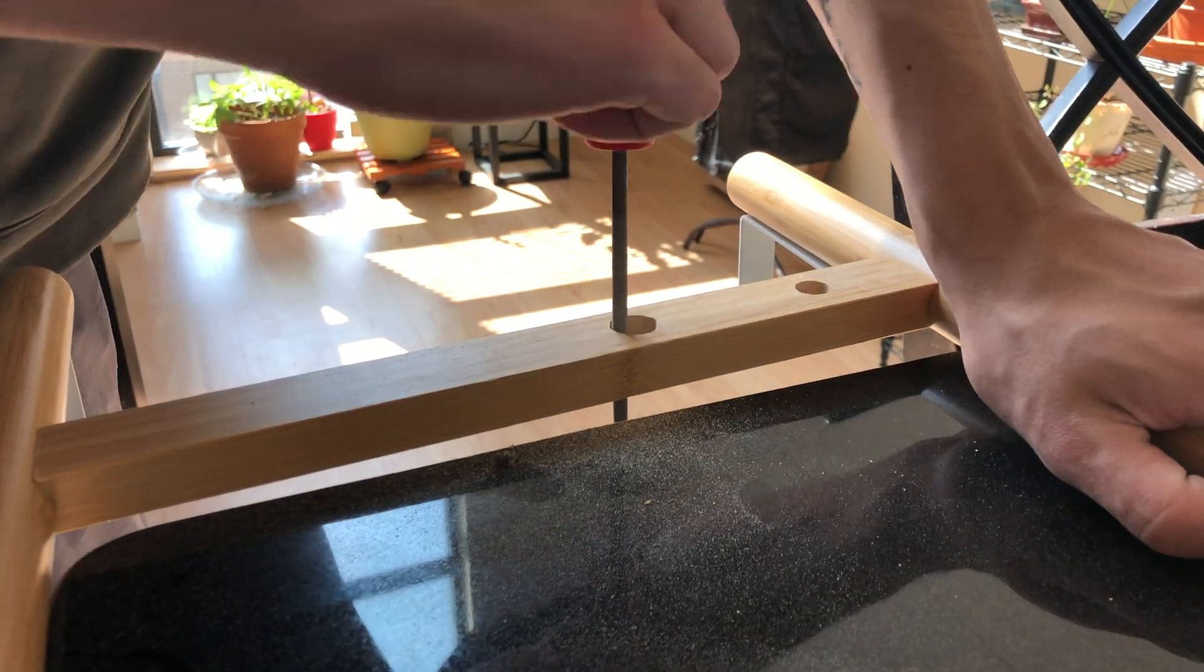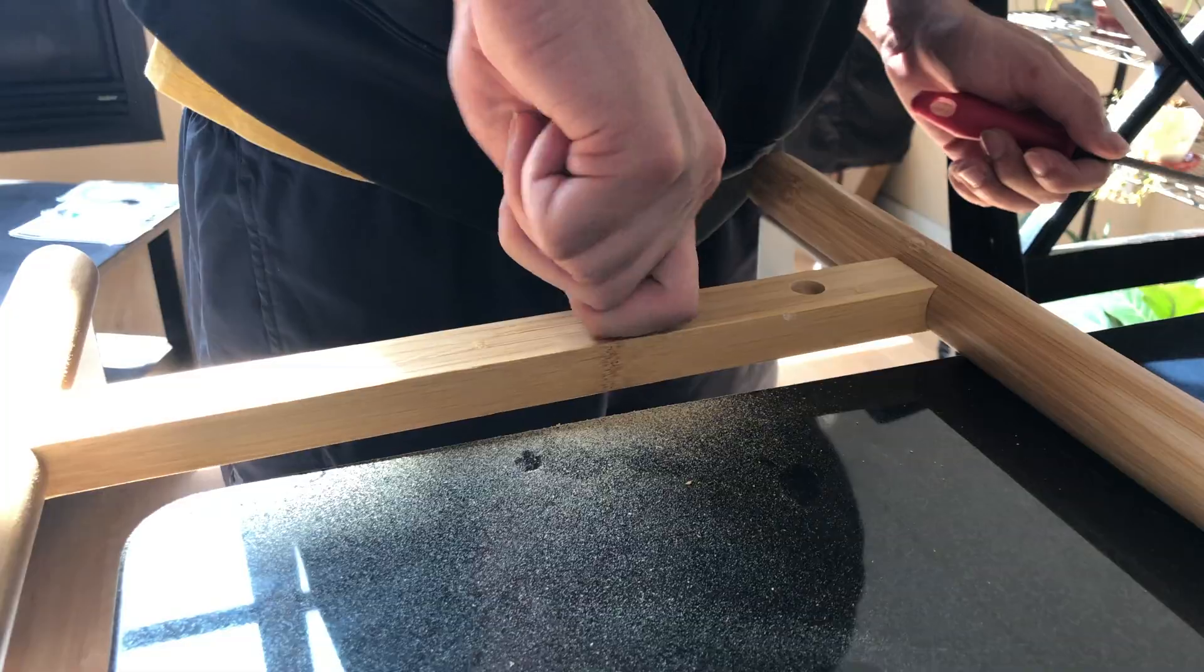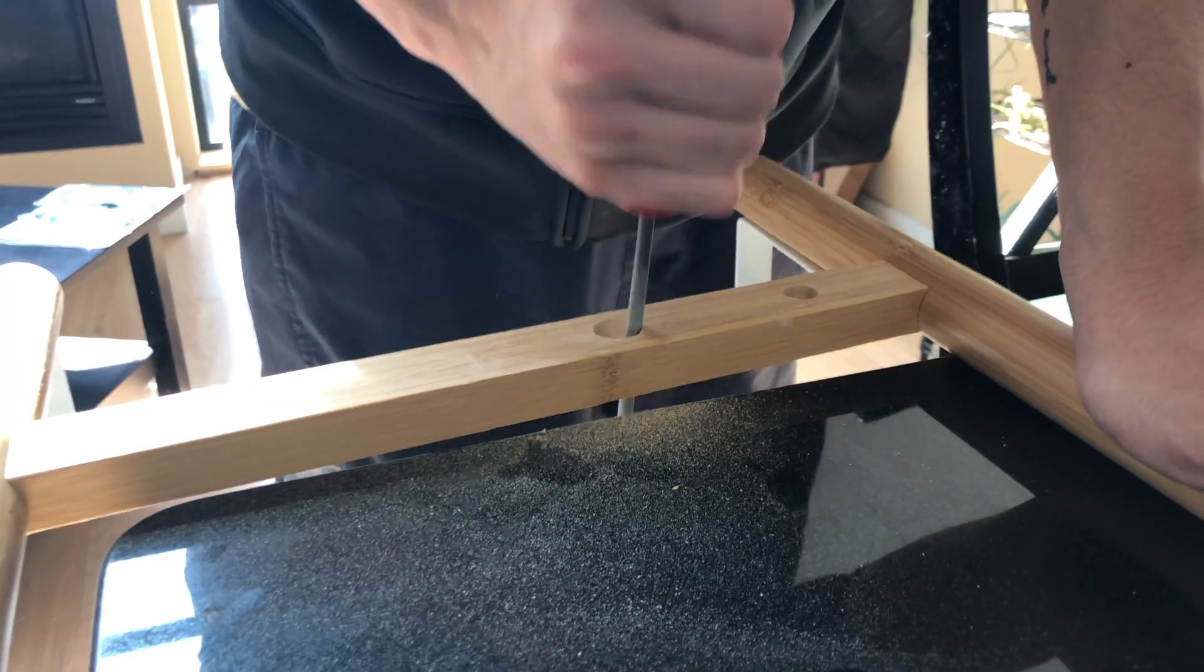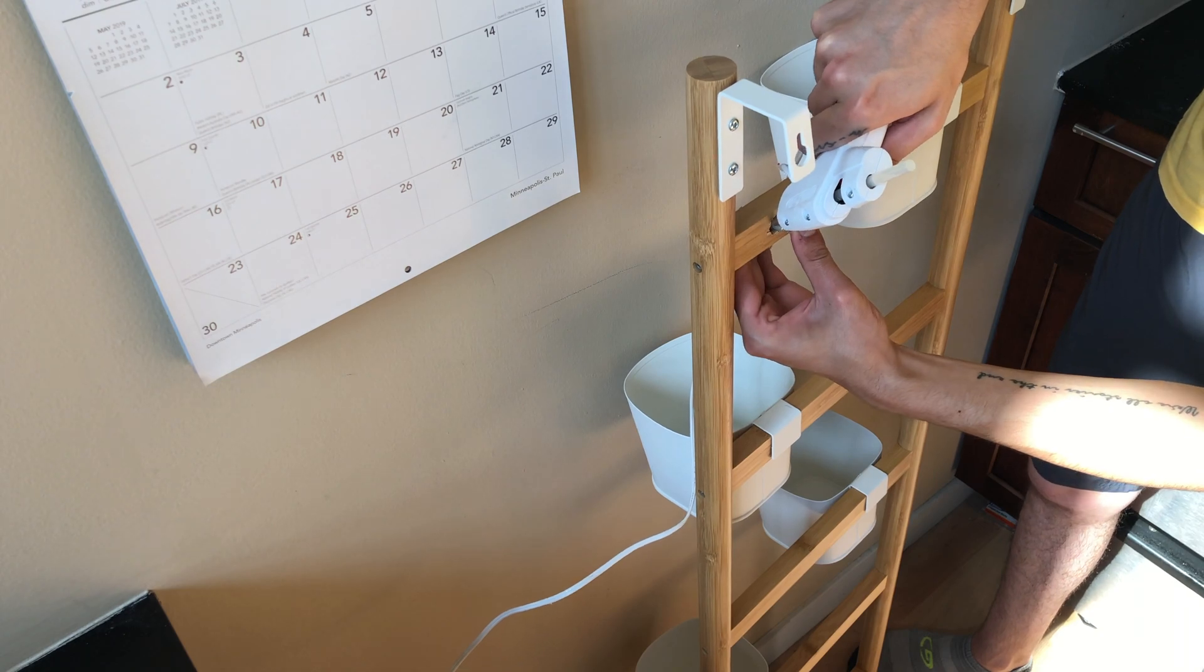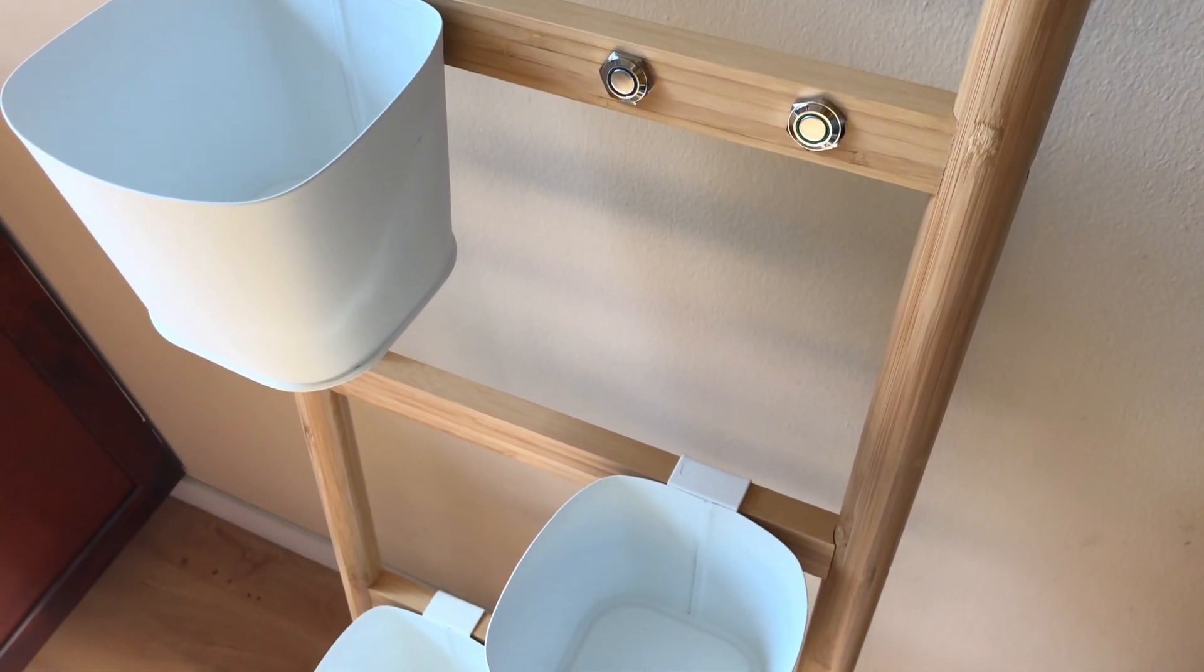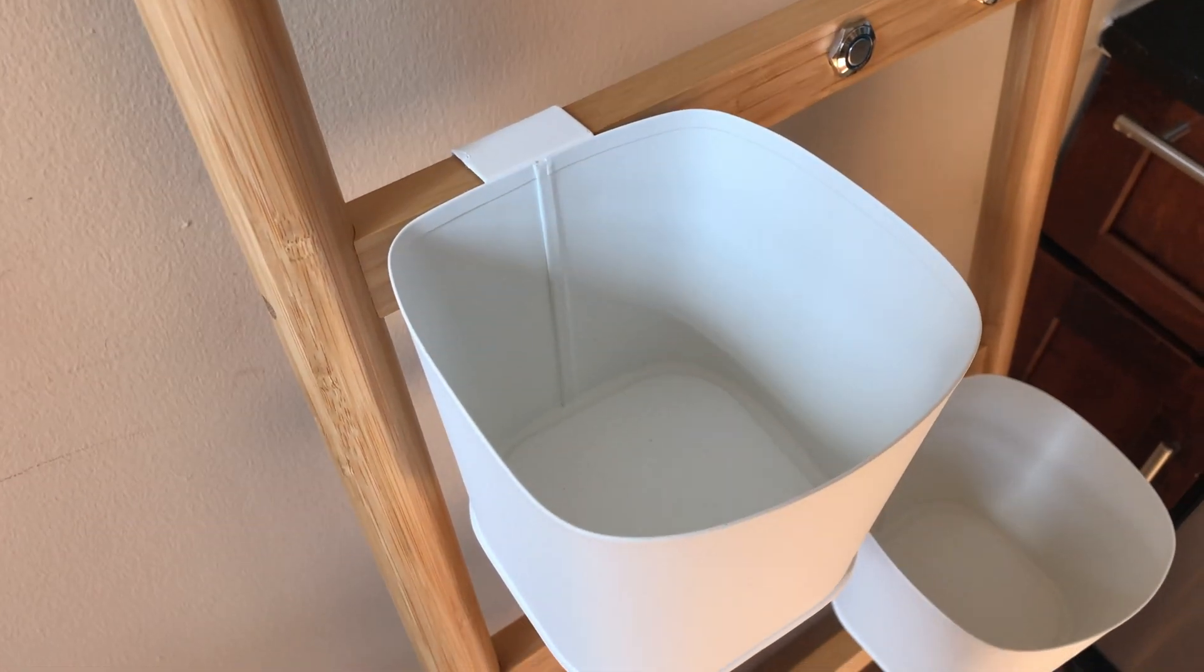I started out by drilling two holes for two buttons. One button will be used to turn on and off the grow lights while the other will be used to turn on plant sitter mode or the fully autonomous mode where the planter will take care of itself.